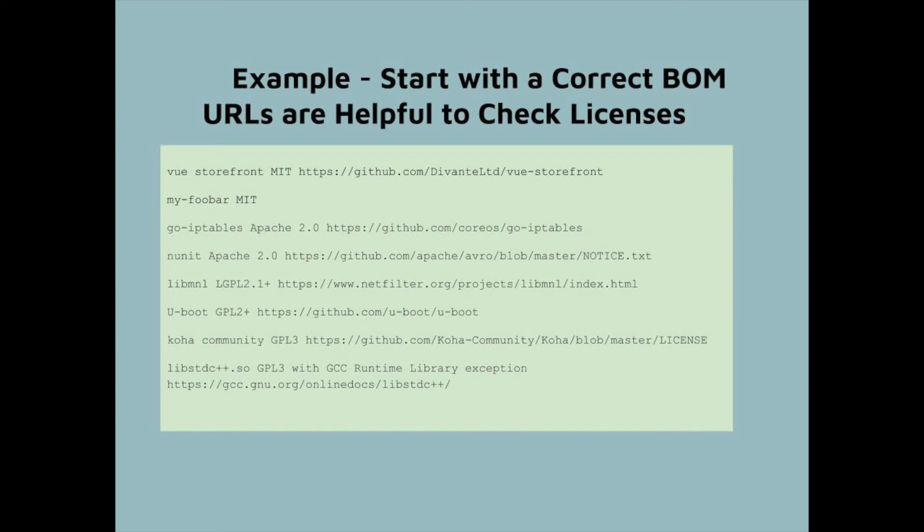Now I'm going to walk you through an actual example of a notice file that I'm constructing based on a bill of materials. You can see here that I have one component under MIT, one under the template MIT, one under Apache 2, one under Apache 2 with a notice.txt file, one under LGPL 2.1, one under GPL 2 or any later version, one under GPL 3, and one under GPL 3 with an exception. I haven't alphabetized these components because the list is very short — if it were more than about 10 items, I would alphabetize them.